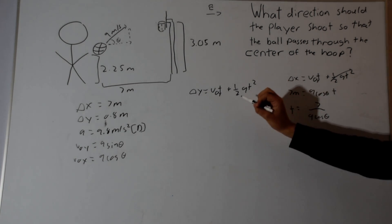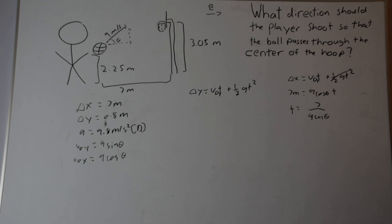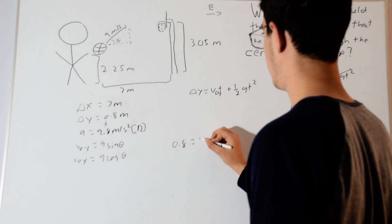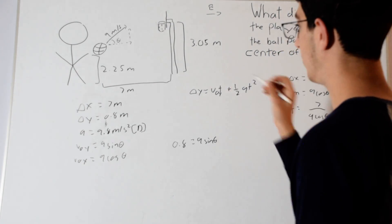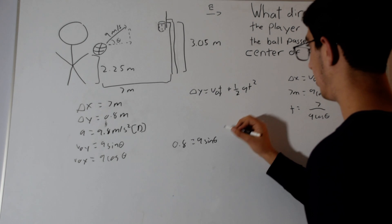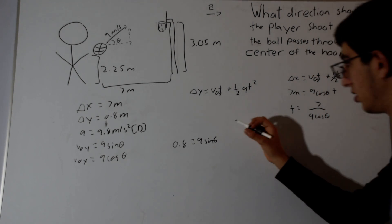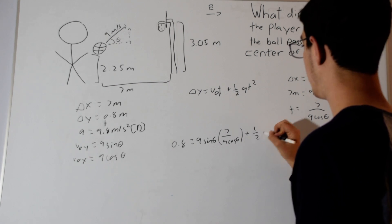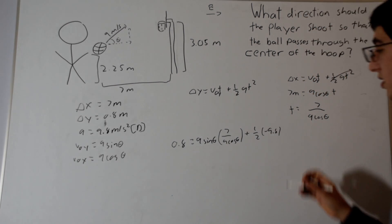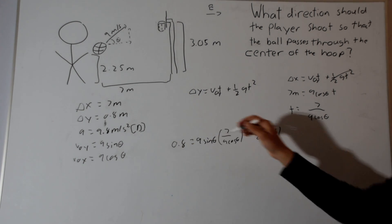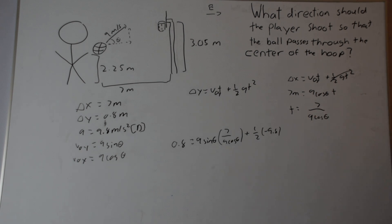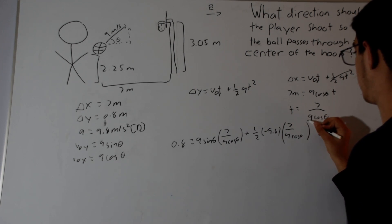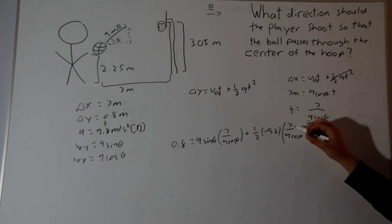Plugging this back in gives us one equation with one variable. The vertical displacement equation becomes: 0.8 = 9 sin θ · (7 / 9 cos θ) + ½ · (−9.8) · (7 / 9 cos θ)². The acceleration is negative because the vertical displacement and velocities are defined as positive upward, making the downward acceleration negative. The full expression (7 / 9 cos θ) is squared in the last term.